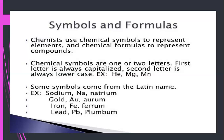So we can say that chemical symbols are short notations we use instead of writing the full name of an element. These symbols are taken from the element's name — there can be one letter or two letters. If we are writing a one-letter symbol, it must be capital, like C for carbon and S for sulfur. If it consists of two letters, the first letter is capital and the second is lowercase, for example Au for gold and Fe for iron. The symbol can be taken from the English name or from the Latin name.